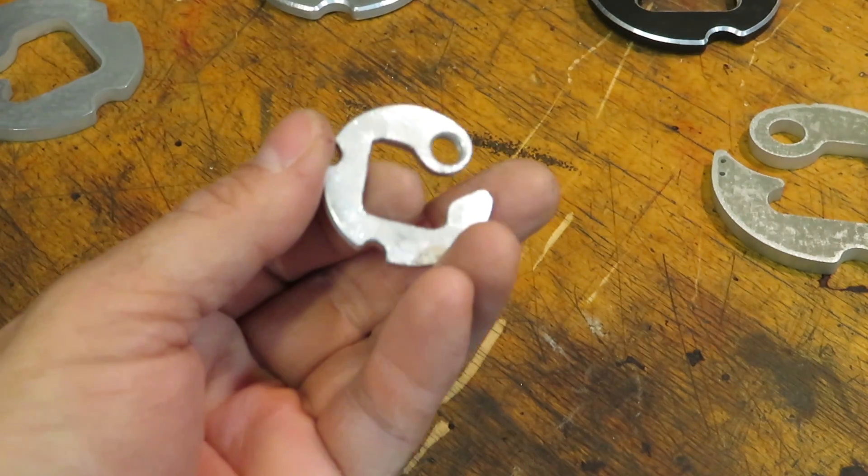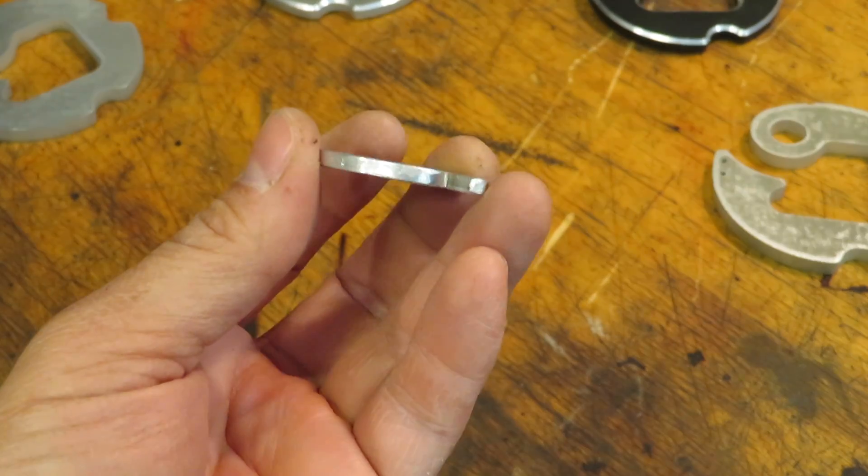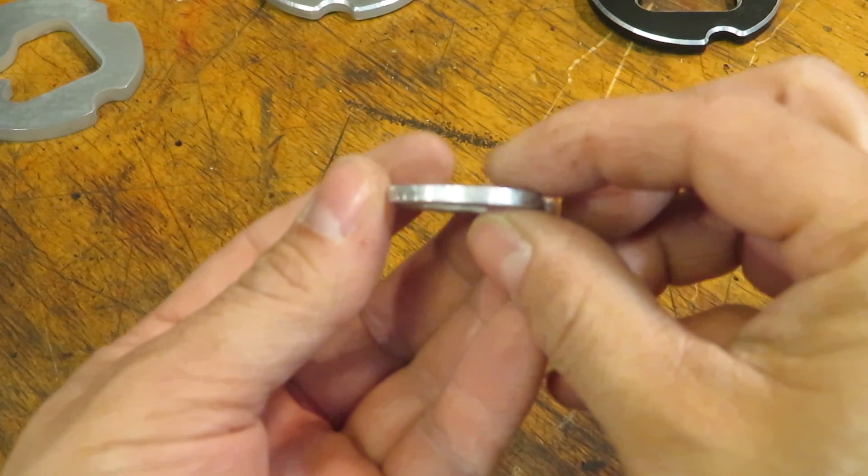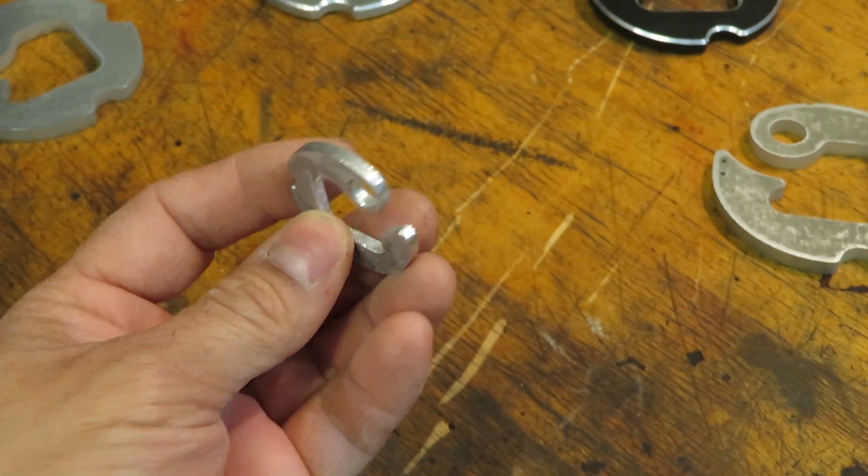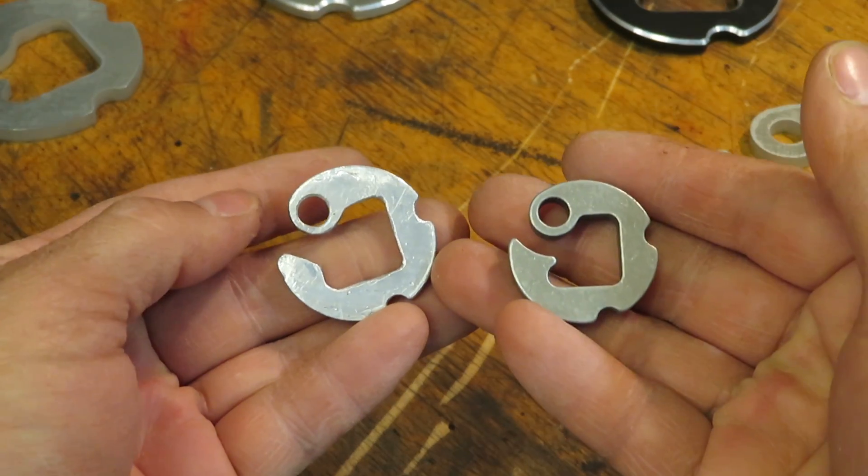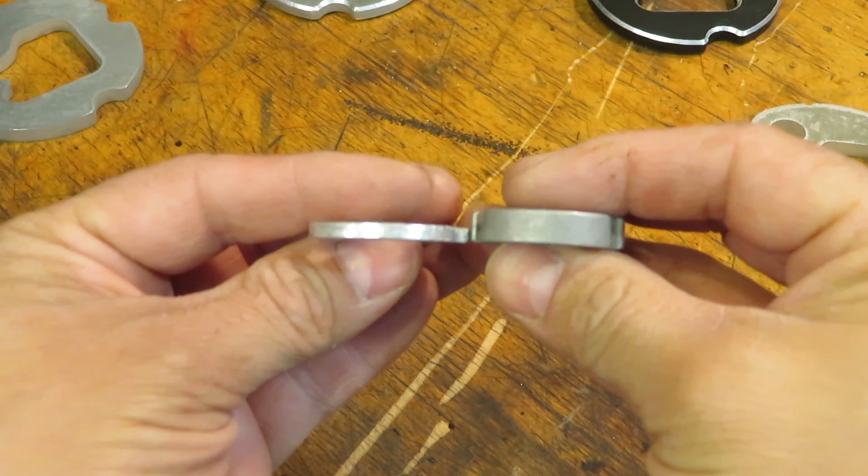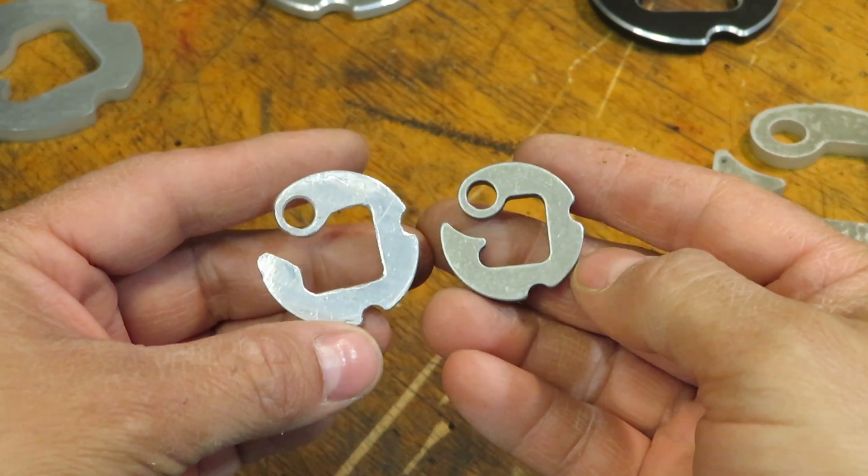So I sent the file off to the water jet cutter and what I didn't realize is the thickness that I approved for him to cut was actually twice what I'd made the prototype out of. So it looks like this. Really thick. But you know what? I think I like that. I think it works out.